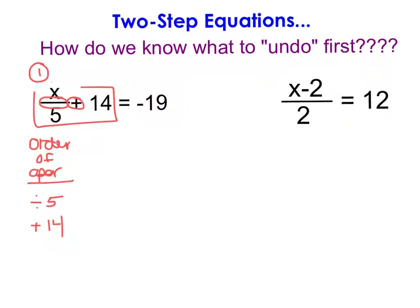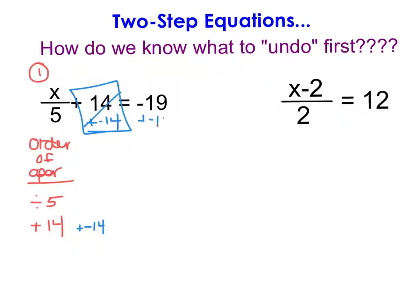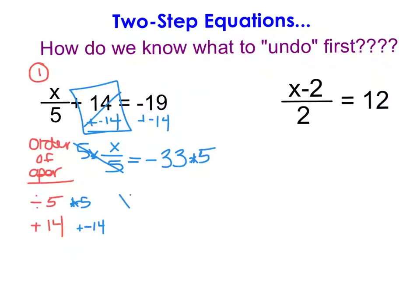This helps me figure out the order in which I need to undo the operations. So the first thing I need to undo is that addition of 14, which can be undone by subtracting 14 or adding a negative 14 to each side. That gives me x/5 = −19 + (−14) = −33. I then undo the division of 5 by multiplying both sides by 5, leaving x = −165. I could verify by plugging that back in to confirm it makes the equation true.